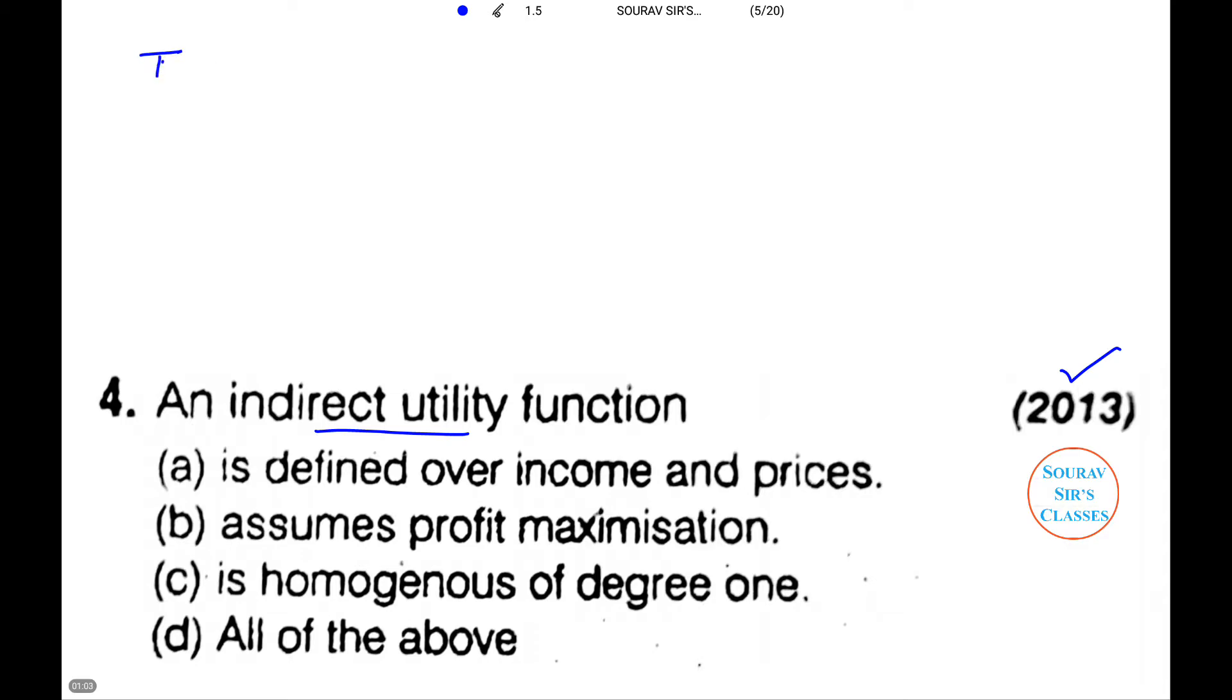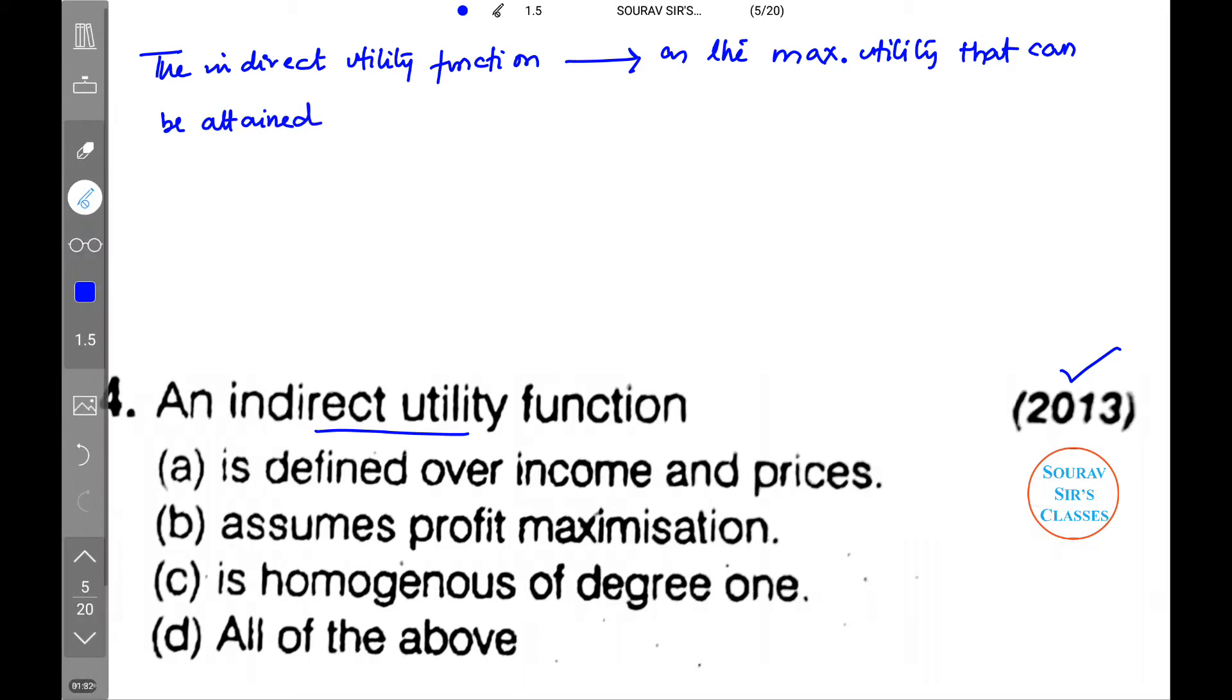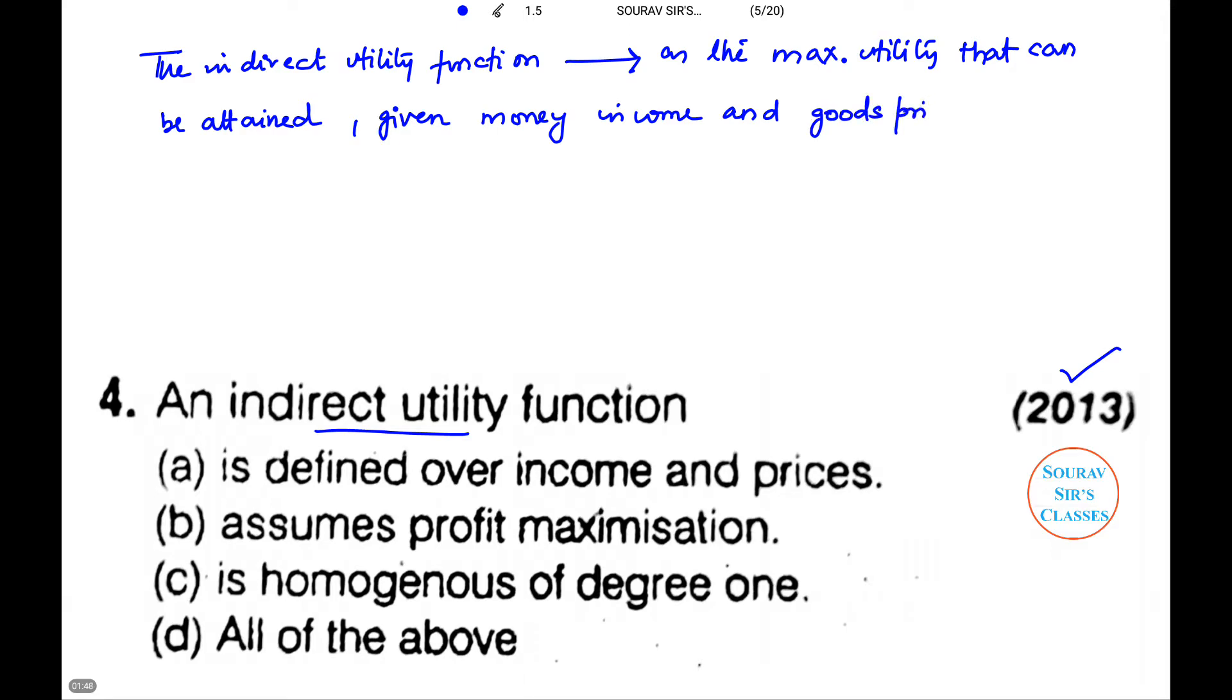The indirect utility function is defined as the maximum utility that can be attained given money income and goods prices. So utility is a function of p1 (price of first commodity), p2 (second commodity), and M (the money income).